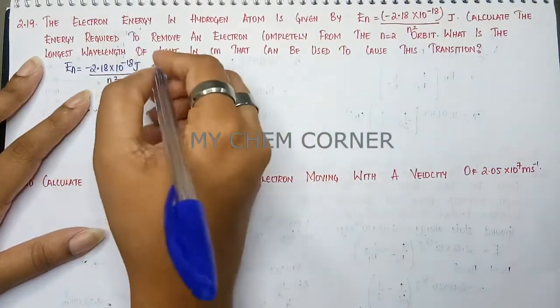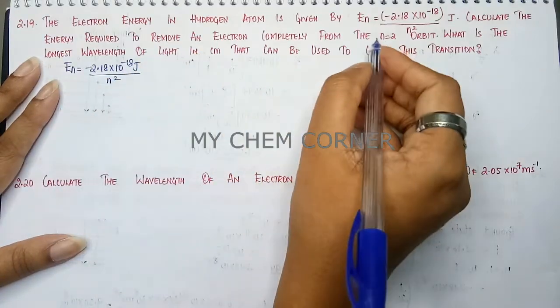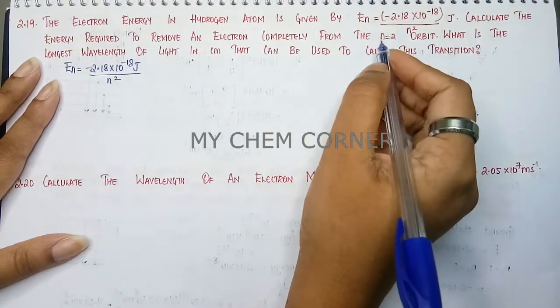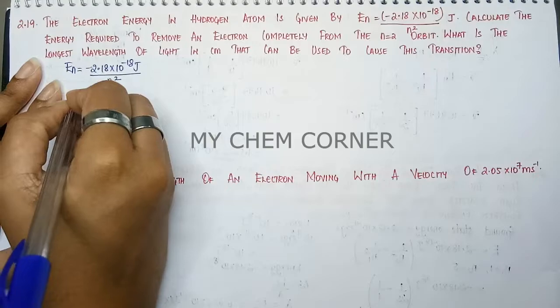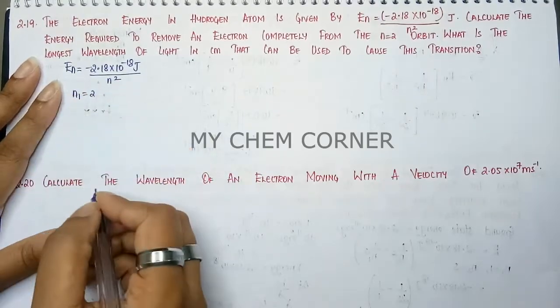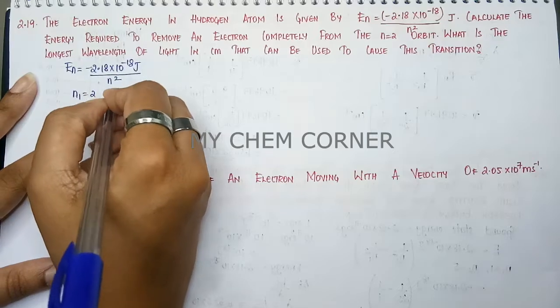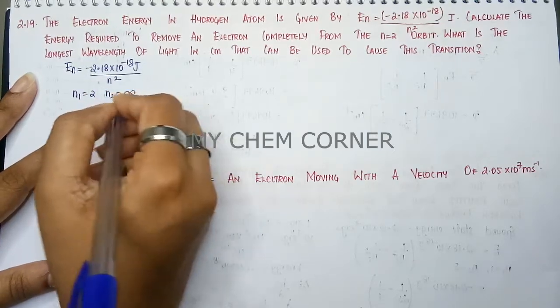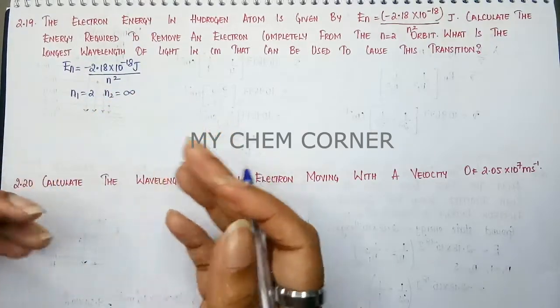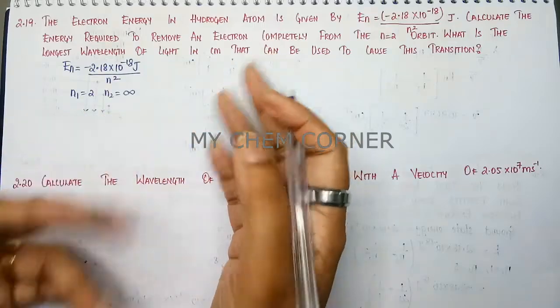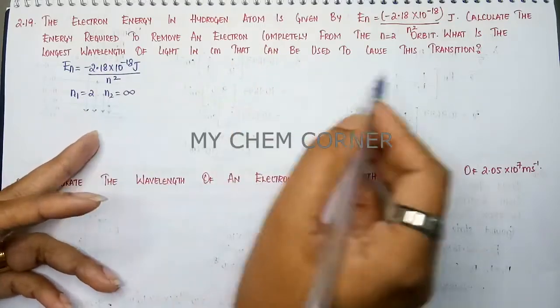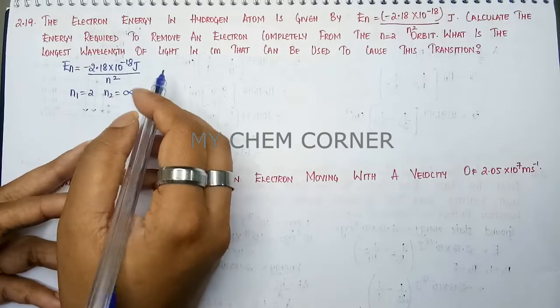Now here, N value if you are looking at, since they are saying N equals 2, this is going to be the ground state of the electron. And when they say that you want to remove the electron completely, which means N2 values infinity, because there is no energy orbital. You are not moving from one orbital to the other. You are trying to remove it completely. So the excited state is infinite there.